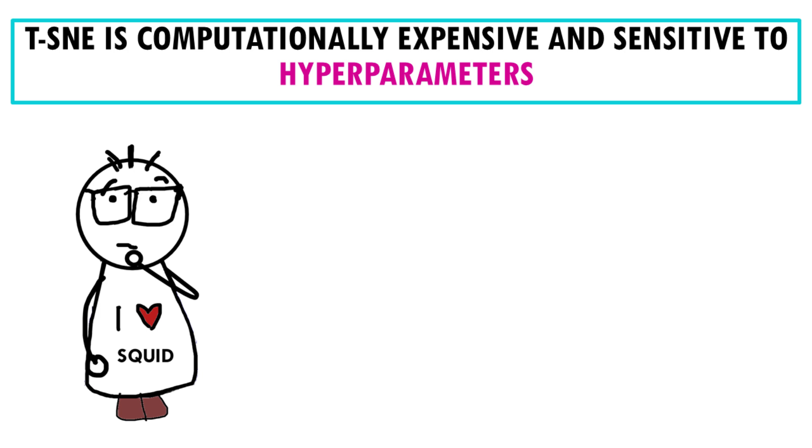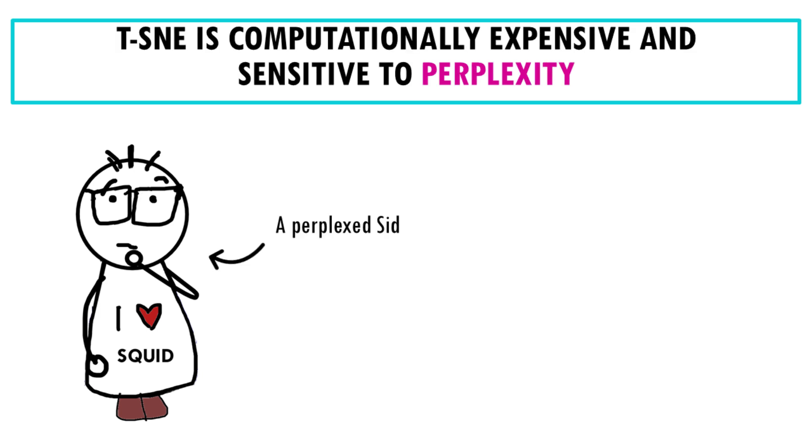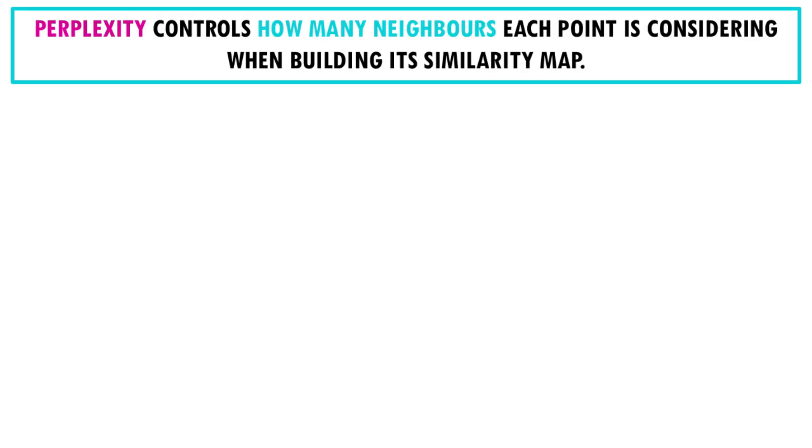Wait a minute. Hyperparameters? The main hyperparameter I'm talking about is the perplexity, which controls how the algorithm balances local versus global relationships in the data. Perplexity is related to how many neighbors each point is considering when building its similarity map. Let's clarify that.